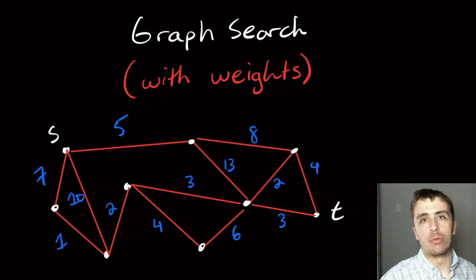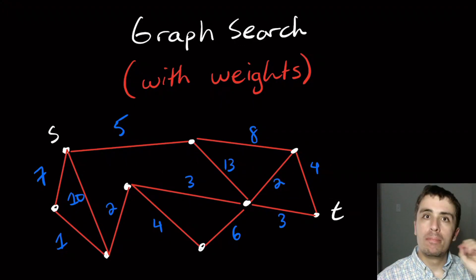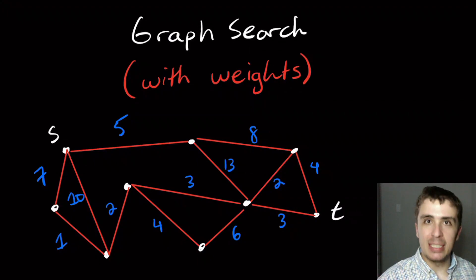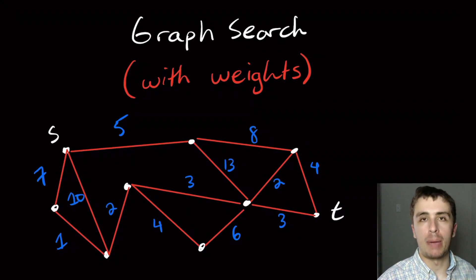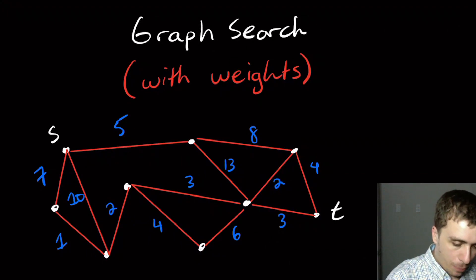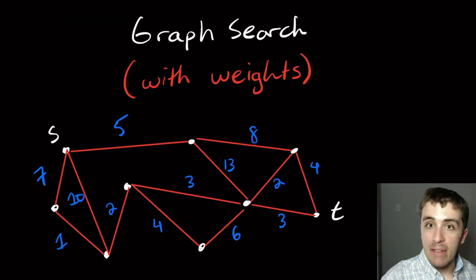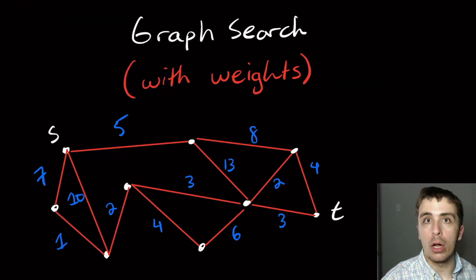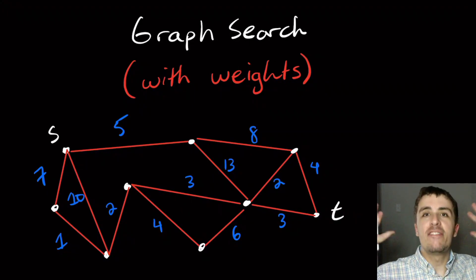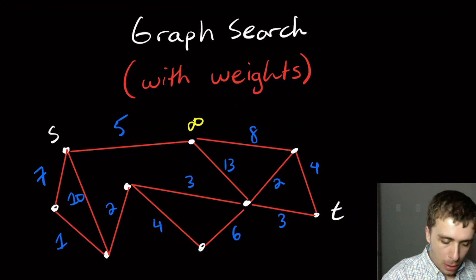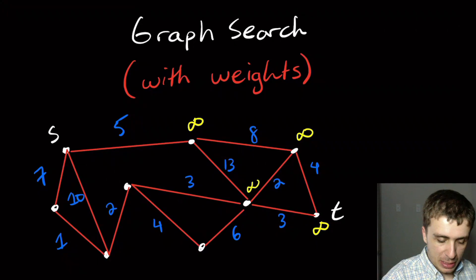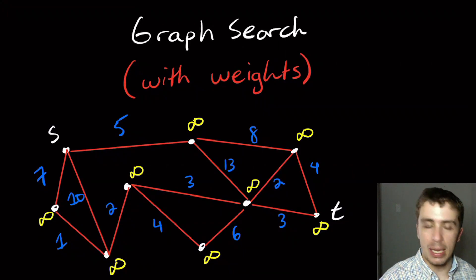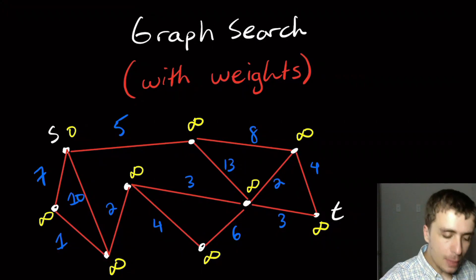I kind of like the original strategy of going out one layer at a time and stopping when you reach t. The problem is we might think the 5 is the right way to go because it's less than the 7, but the 7 actually is the better way because of edges further down the line. So what we can do is a variant of breadth first search where instead of going out one edge at a time, we pick which edge to go out on that increases the total cost as little as possible. I'll mark each node as being infinitely far away until I see proof otherwise.